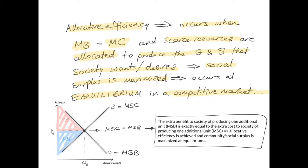Allocative efficiency occurs at equilibrium because the supply curve represents the marginal social cost (MSC) and the demand curve represents the marginal social benefit (MSB). At equilibrium, MSC equals MSB — the extra benefit to society of producing one additional unit is exactly equal to the extra cost to society of producing one additional unit. Allocative efficiency is achieved and community surplus is maximized at equilibrium.